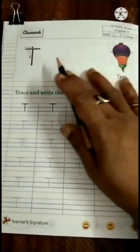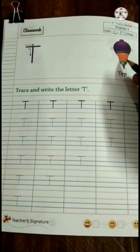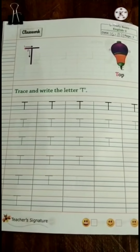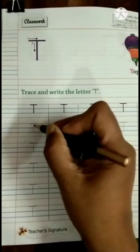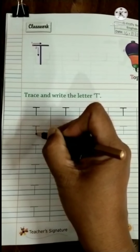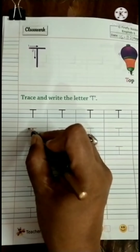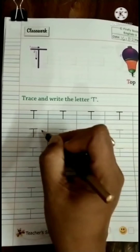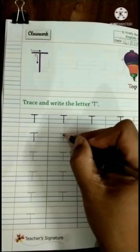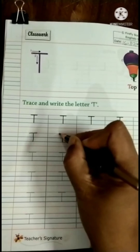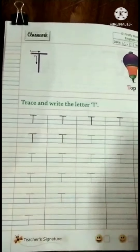T for top, T for tiger, T for tap. Now, see how to trace capital letter T. First we will draw one standing line and then a slipping line. 1, 2.